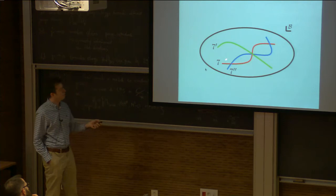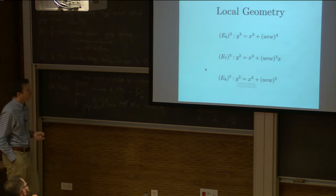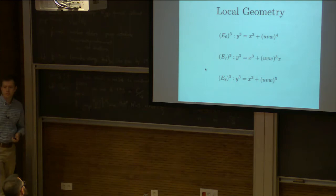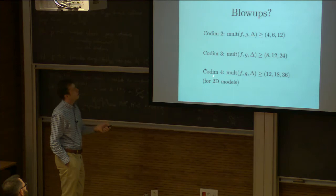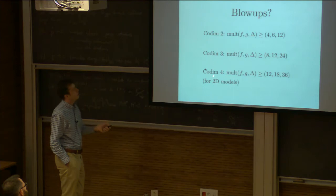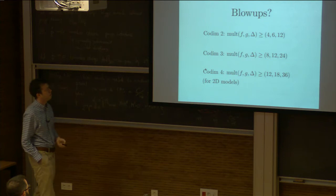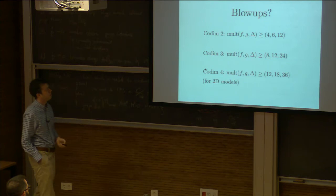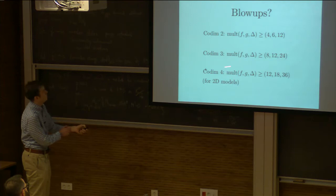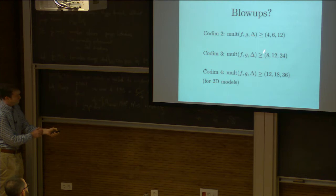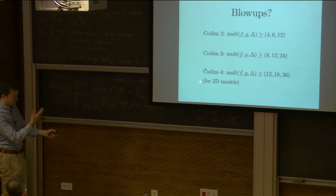Now Yukawa couplings — moving from pairwise intersections to triple intersections. In F-theory, I write down three collisions of seven-branes. This sounds bad in terms of the order of singularity, and it is — you're going to have to start resolving the singularity. As you go up in codimension, the condition for when you need to blow up changes according to the multiplicity of F, G, and Delta. The familiar case is the (4,6,12) points for conformal matter. As you go up in codimension, the order of vanishing escalates — in codimension three it's (8,12,24); for two-dimensional models it would be (12,18,36).